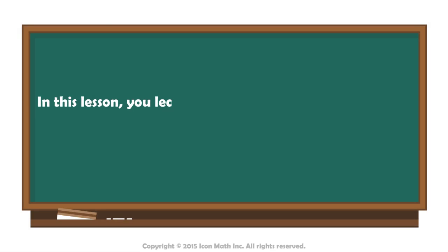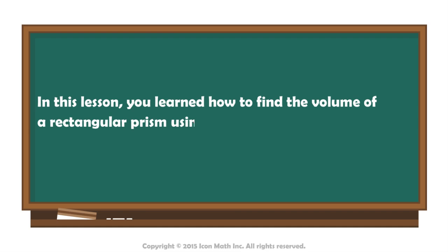In this lesson, you learned how to find the volume of a rectangular prism using the formula volume equals area of the base times height.